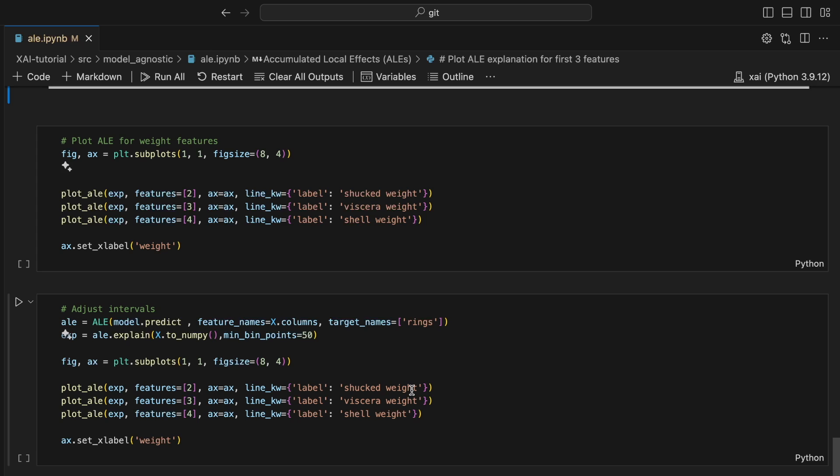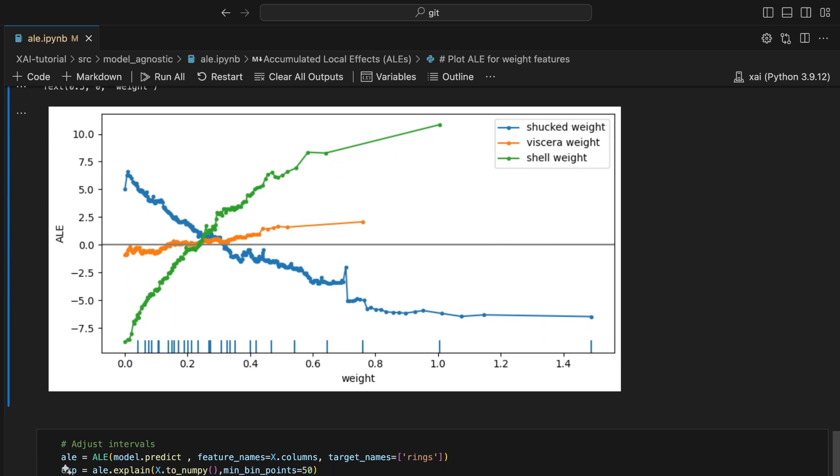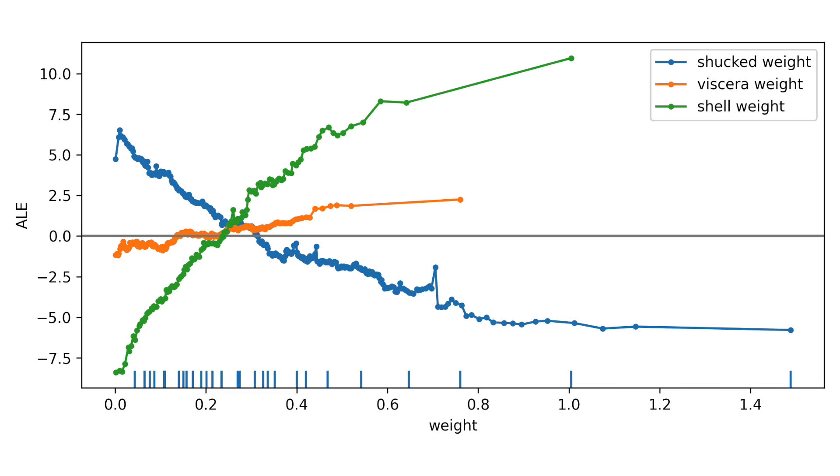If features have similar values, it may be useful to plot their ALEs on the same axis. We do this for the three weight features. It is now easy to compare the effects of these features. Notice that shuck weights and shell weights have significant effects on the prediction. However, they are in the opposite direction.